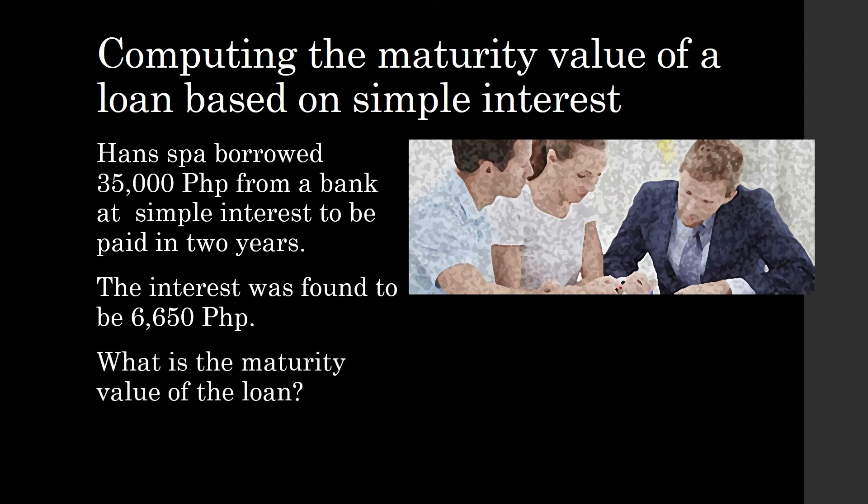What is the maturity value of the loan? The maturity value is just the principal plus the interest. The principal was 35,000 pesos. The interest paid is 6,650 pesos. So the maturity value of the loan is 41,650 pesos.